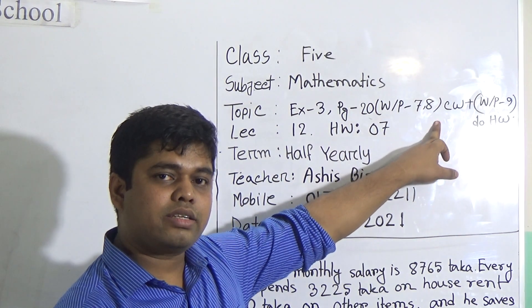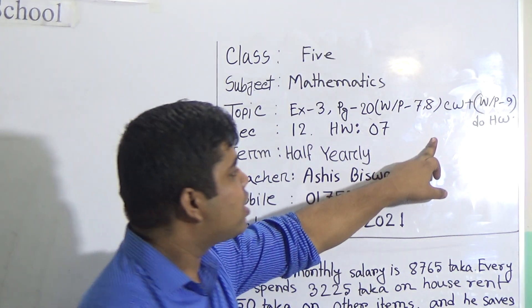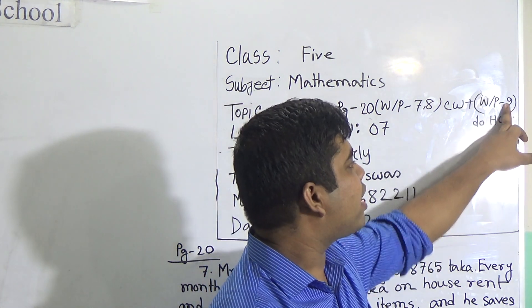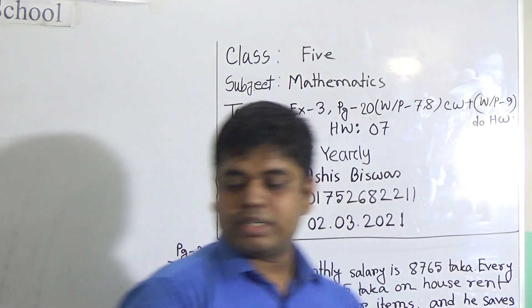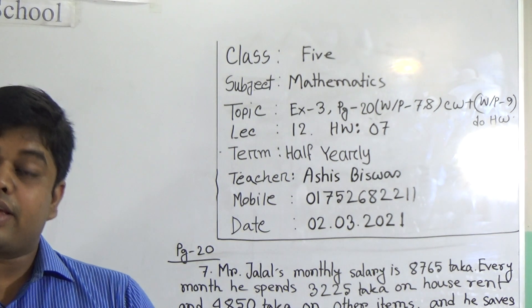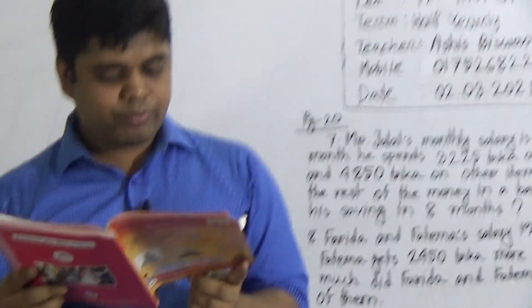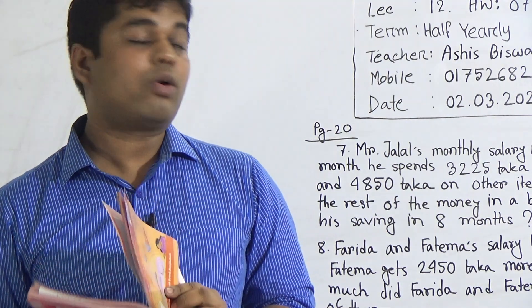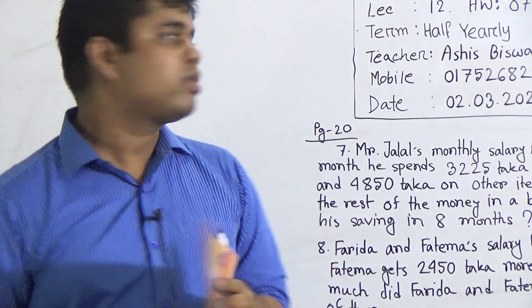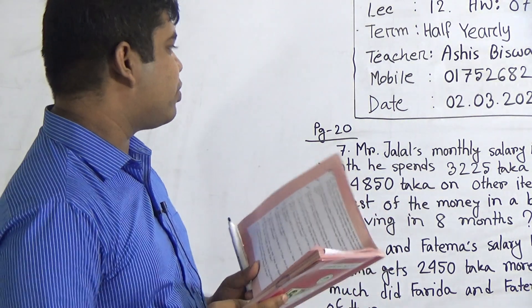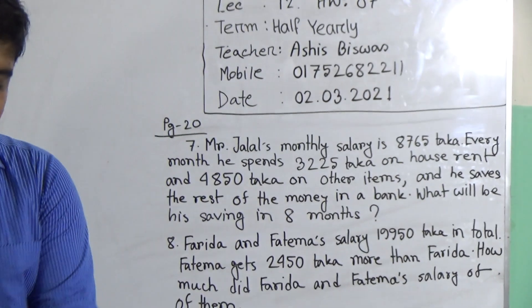Our today's topic is Exercise 3, which is on page number 20. From that exercise we shall solve question number 7 and 8 as your CW, and question number 9 will be your SW. I repeat, question number 9 will be your SW. I hope all of you have this EMB book. I have already written questions 7 and 8 on the board. Question number 9 is not written on the board — you must do that as your SW.